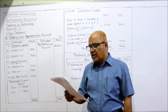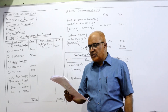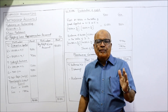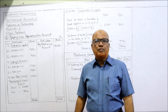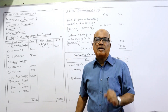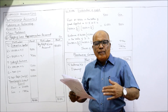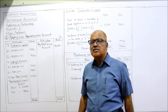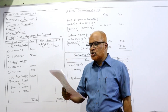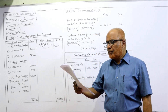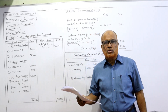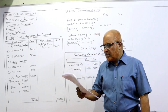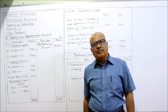The first eighteen thousand of profit is distributed in the ratio of fixed capital contributed, and the balance in the ratio of three is to two. So after calculating the divisible profit, the first eighteen thousand will be distributed in the fixed capital ratio, and whatever divisible profit remains after deducting eighteen thousand will be shared in the ratio of three is to two. The profits disclosed before this adjustment were eighty thousand — this is the net profit brought forward from the profit and loss account. During the year, drawings were six thousand and five thousand respectively.